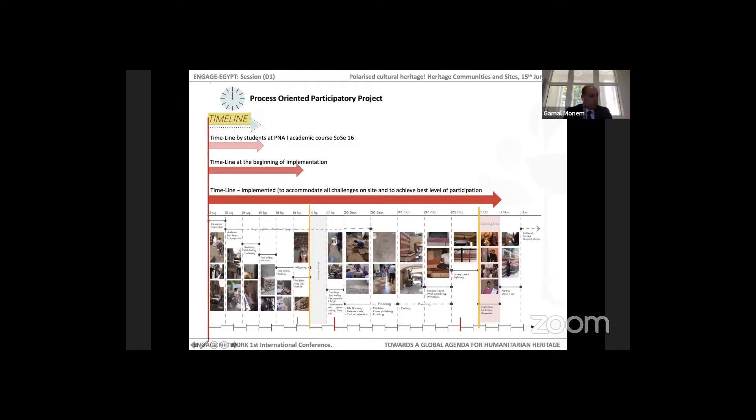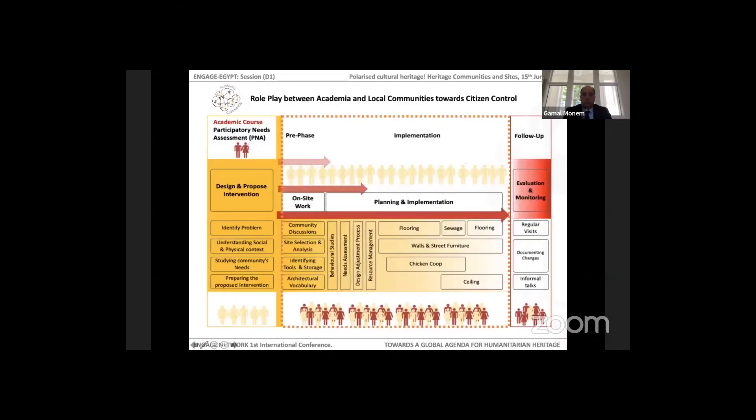Here you can see how we designed the project in our academic course, participatory needs assessment course, and how we estimated the time. Our estimated timeline when we started planning for the project was not matching the reality and not responding to the essential part of the process which includes the community and the participatory activities. Here also you can see how we tried to release ourselves from the area by the end of the project and hand over the whole process to the local residents and raise their ownership sense of the place and intervention. We continued only our work by following up and evaluating and monitoring the whole project results and process.